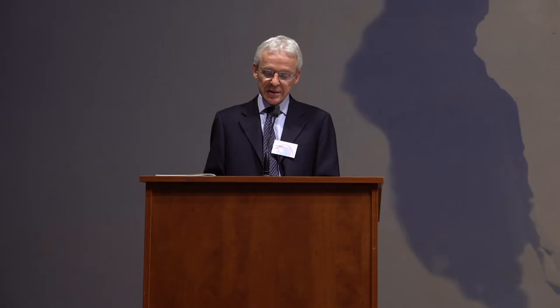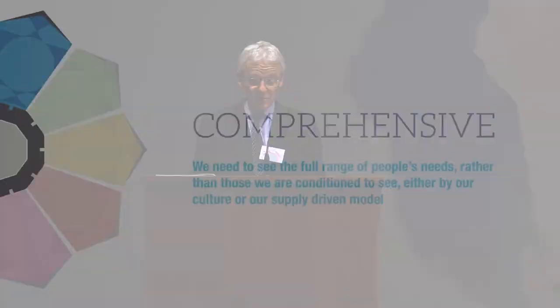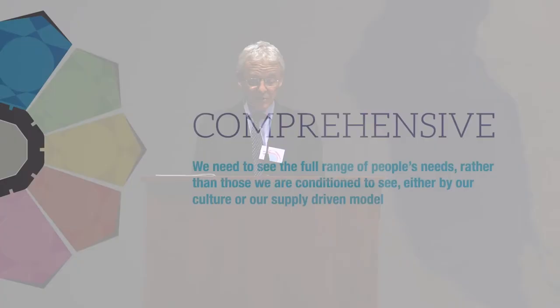The meeting paper lays out five key dimensions which can help understand what people really need. The first dimension is about seeing the full range of people's needs rather than those we're conditioned to see by our culture or supply-driven model. Progress has been made in improving multi-sector needs assessments and developing new methods of assessing priorities. But a major obstacle continues to be the lack of agreement about where the legitimate limits of humanitarian action actually lie, and this debate shows little sign of resolution.